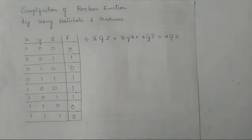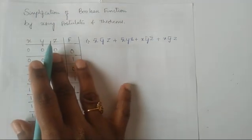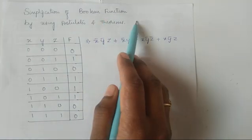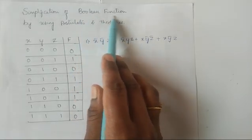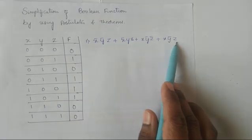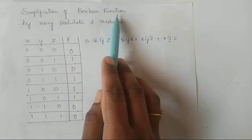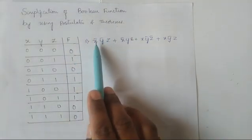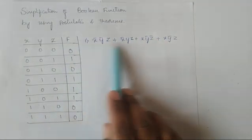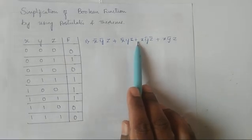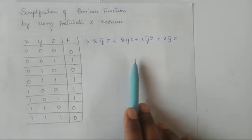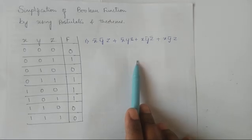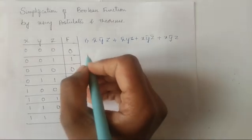Welcome to Vinuta's Math Channel. This is the 11th video of Module 1. In this video we are going to discuss the simplification of Boolean functions by using the postulates and theorems. They will provide a Boolean function and using the postulates and theorems we have to reduce the Boolean expression into a smaller one which has fewer variables, literals, and terms.